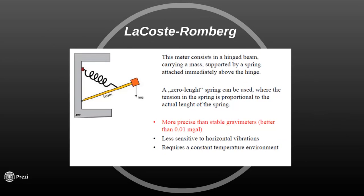The most widespread and most popular tool for gravity measurement is the Lacoste-Romberg gravimeter. This gravimeter consists of a hinged beam carrying a mass supported by a spring which is attached immediately above the hinge. The thing you have to know about this gravimeter is that the beam is made of bi-metallic material and the spring is made of quartz material.